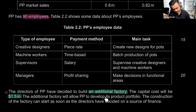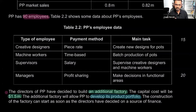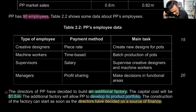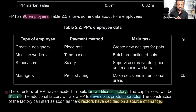The additional factory will allow PP to develop its product portfolio — they'll be able to launch newer products, other types of pots, diversify. The construction can start as soon as directors have decided on a source of finance — that's the Part C question: what are the things you think about when looking for a source of finance? The question doesn't ask us to recommend a source, just the factors. There are five factors to remember.